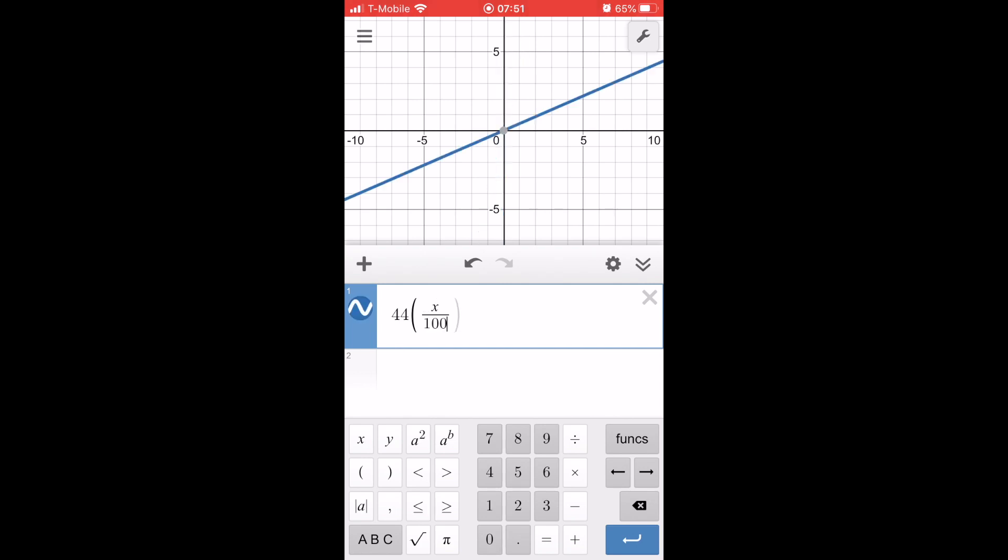You want to go ahead and just plug in the function. So I think one of the parts, part B or C, is asking for r of t set equal to 0.7. So for r of t, I just put in my function 44, and then I use x instead of t, and I put x over hundred to the third power.